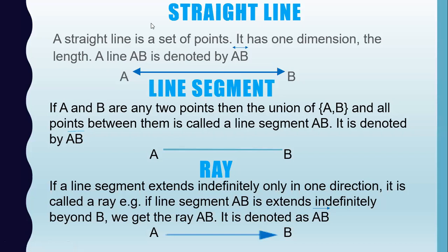Now, what is a straight line? A straight line is a set of points. It has one dimension, that is called the length. It is denoted by two arrowheads, which means it can be extended in both directions.